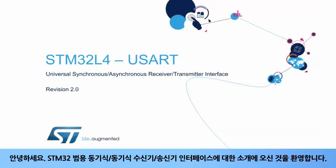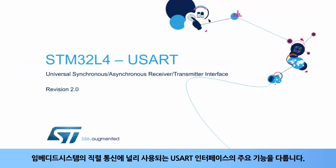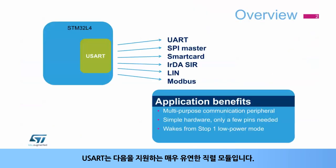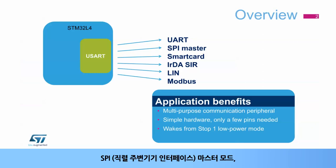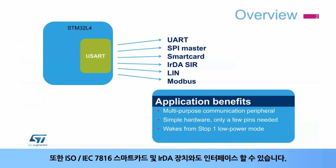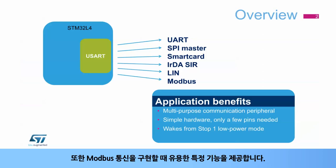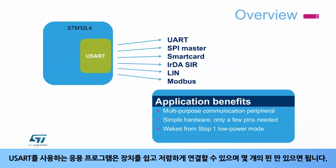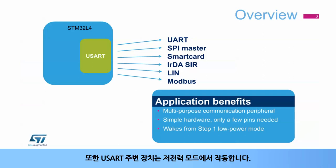Hello and welcome to this presentation of the STM32 Universal Synchronous-Asynchronous Receiver-Transmitter Interface. It covers the main features of this USART interface, which is widely used for serial communications in embedded systems. The USART is a very flexible serial module that supports asynchronous UART communication, SPI or Serial Peripheral Interface Master Mode, LIN or Local Interconnect Network Mode. It can also interface with ISO IEC 7816 smart cards and IrDA devices, and provides certain features useful for Modbus communications. Applications benefit from easy and inexpensive connection between devices, requiring only a few pins, and the USART peripheral is functional in low power modes.